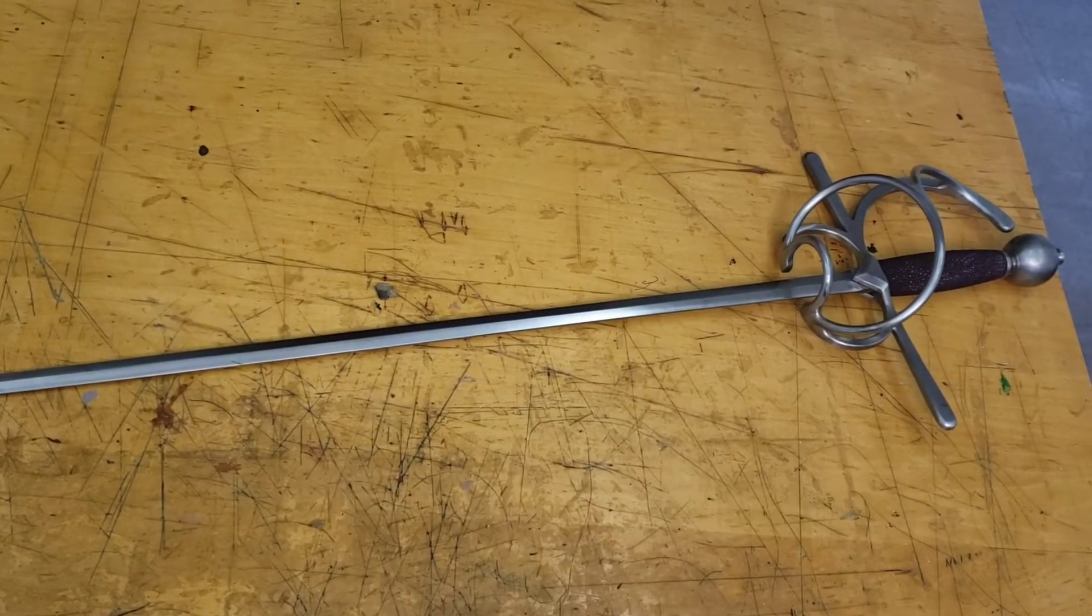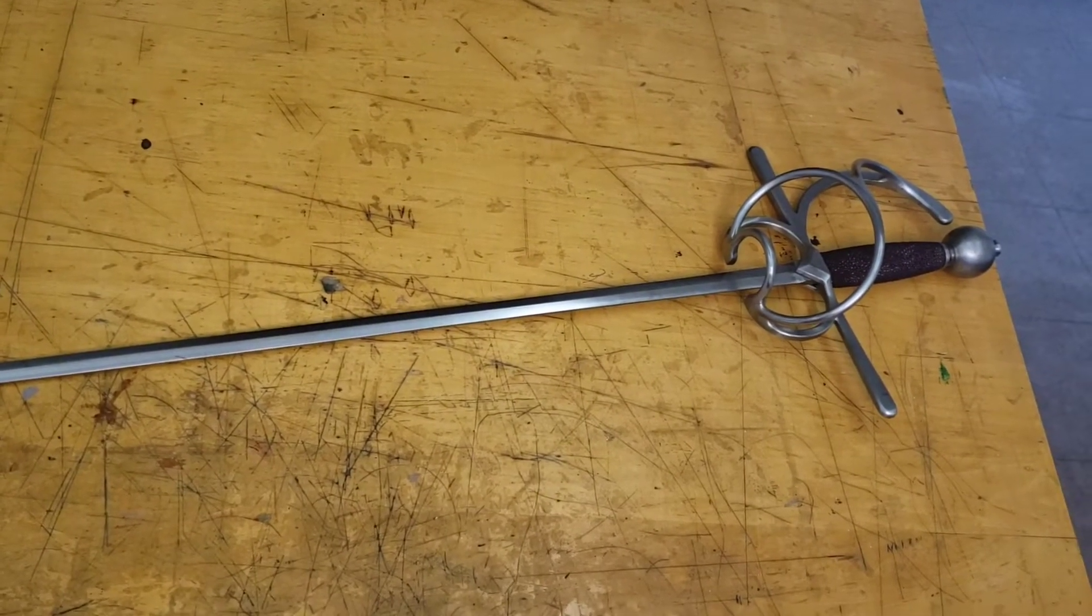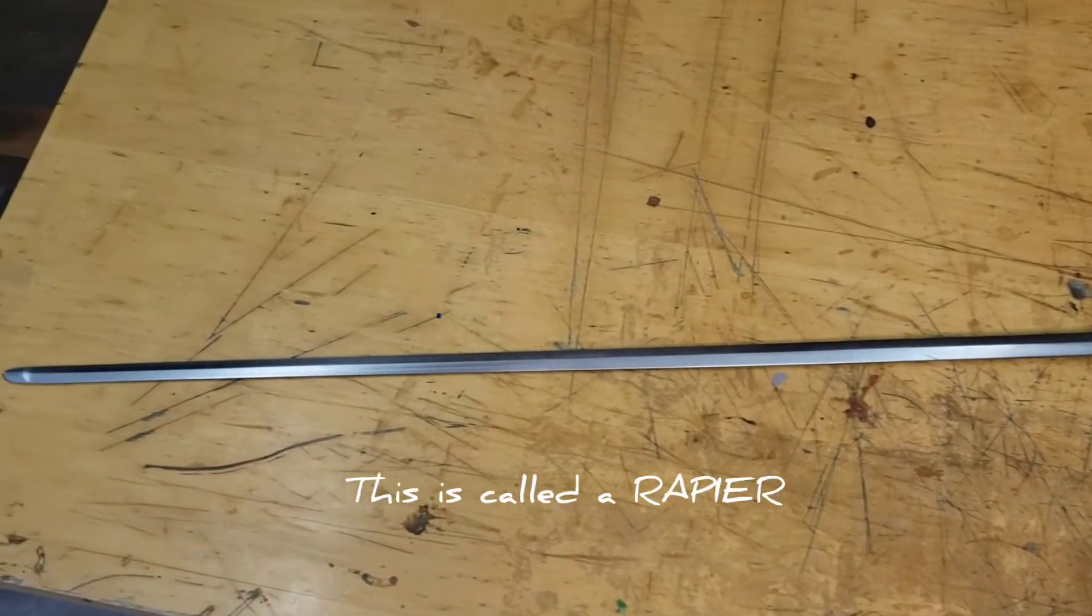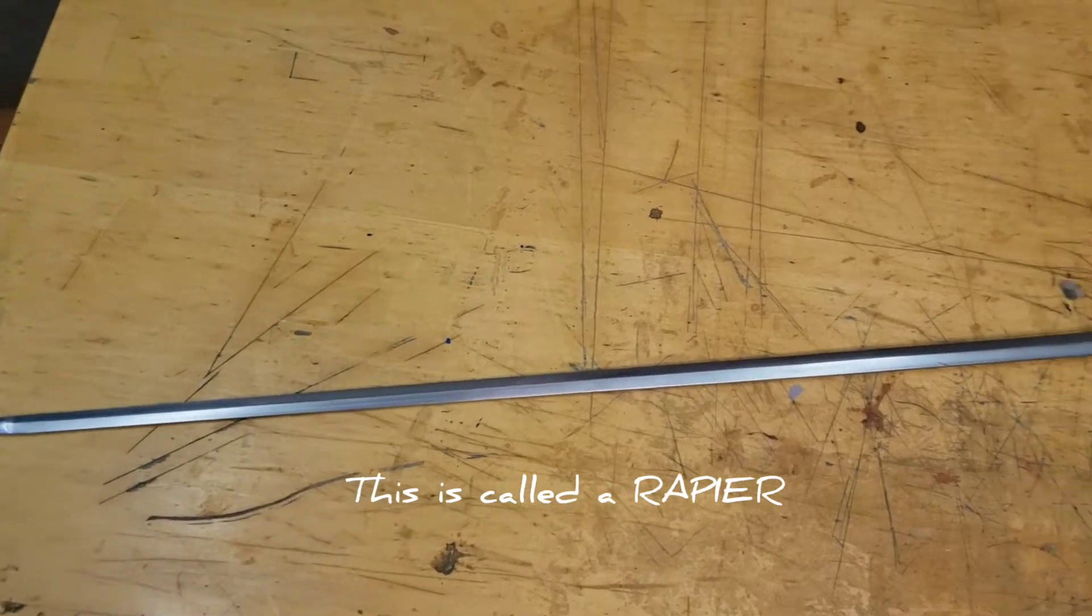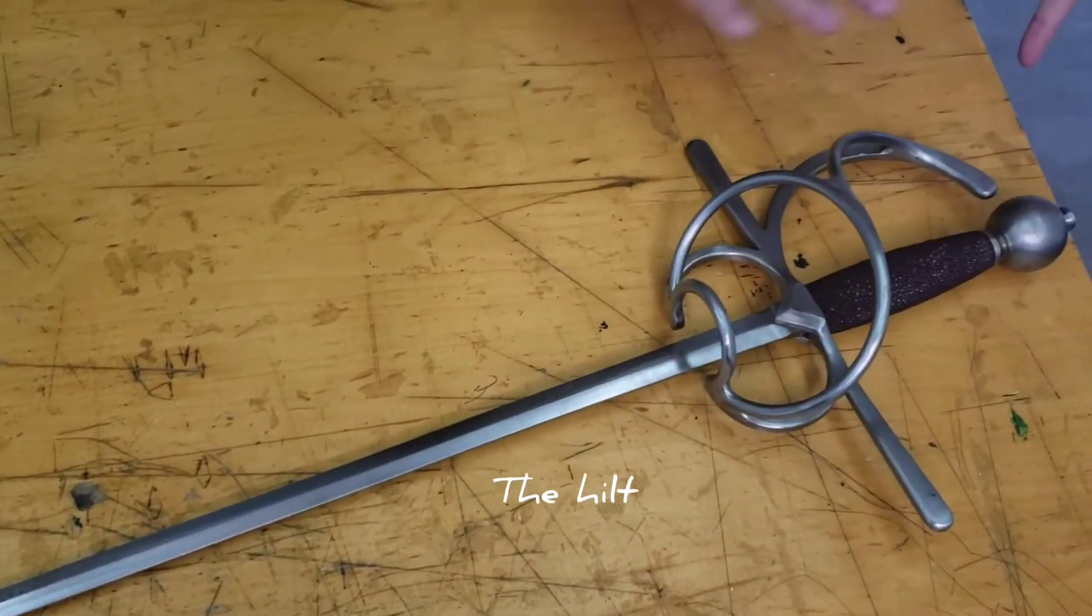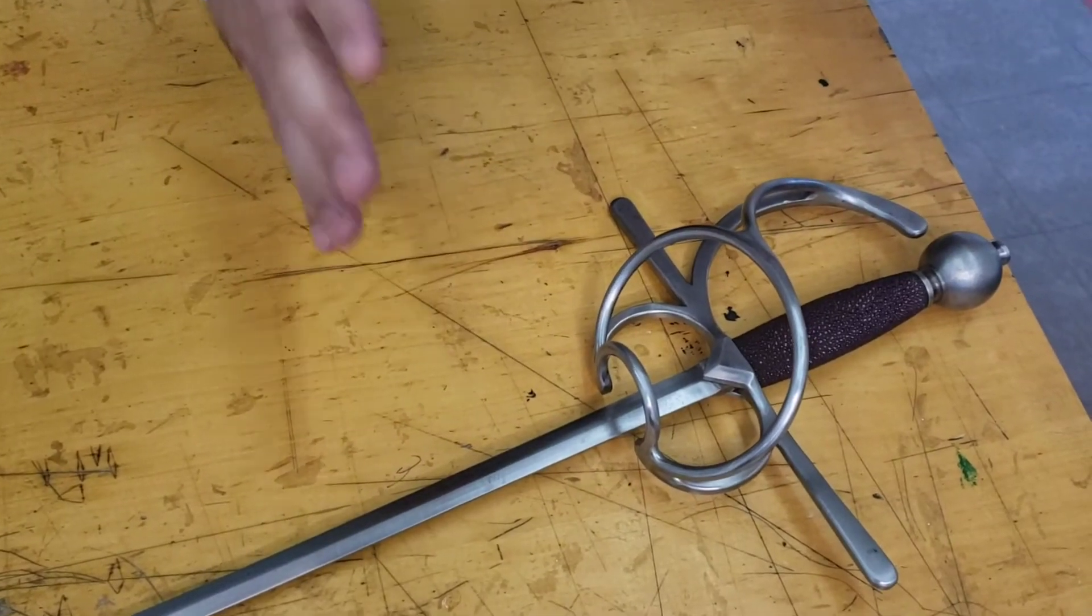So before we begin constructing our own sword, I would like to familiarize everyone with the basic parts of a sword. This one here is a rapier. This area down here, the whole thing is called the hilt, which is made up of a few pieces.